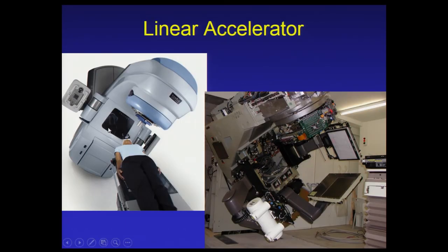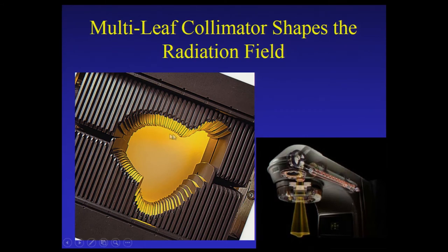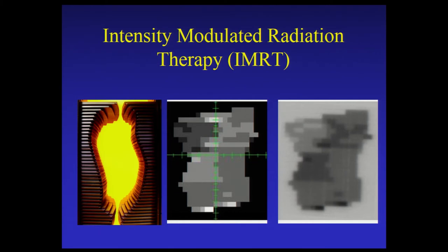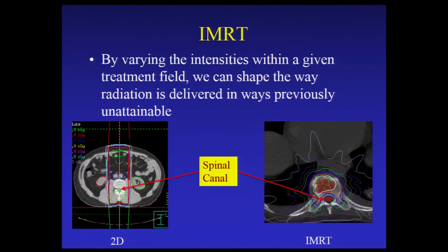The tool used to deliver radiation to the spine is called a linear accelerator. The radiation is produced and exits the treatment head, targeted to the patient. As it exits, the beam is shaped by lead leaves called multi-leaf collimators. An advance from the 1990s involved modulating the intensity of the radiation beam — these lead leaves can move while the beam is on, forming different shapes and changing the beam's intensity as it points to the target in the body. This allows us to shape the radiation in ways that hadn't been done before.